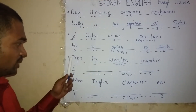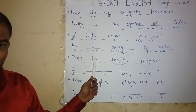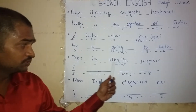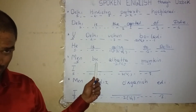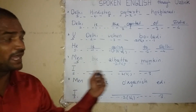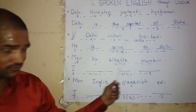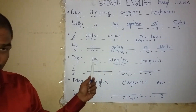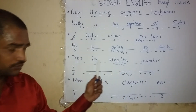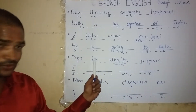Look here. I can do this. First, subject is 'men' — I. The word for 'mumkin' — can. The word for 'albatta' — do. The word for 'bu' — this. I can do this.